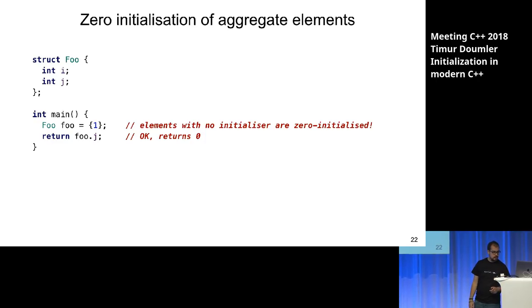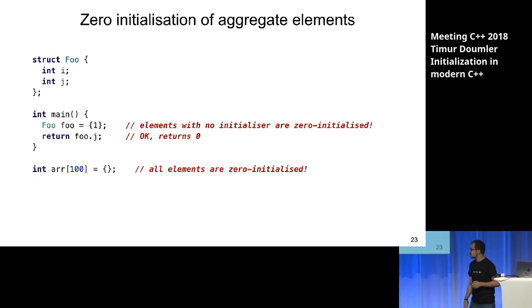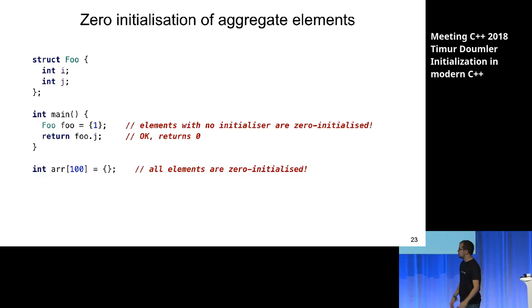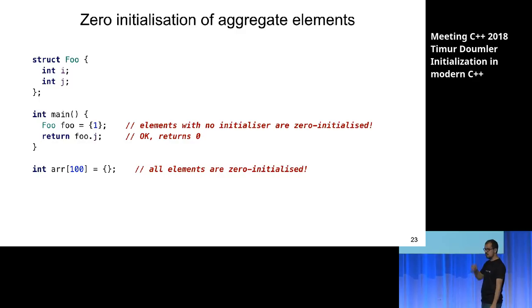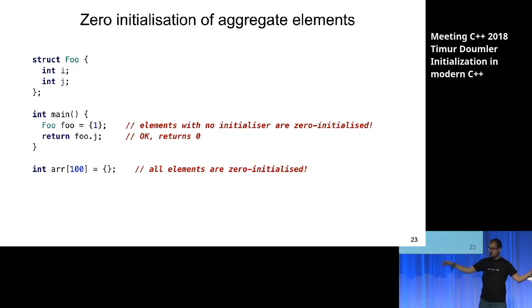That's also a convenient way to zero out a lot of memory — you can initialize an array with empty braces and the whole thing is zero initialized.